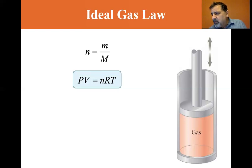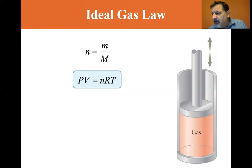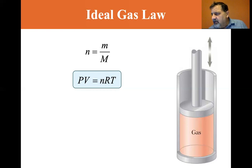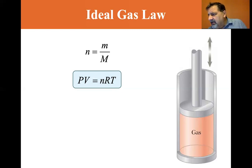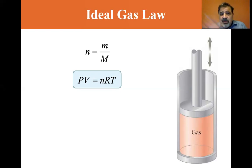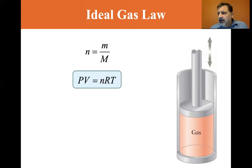The first relationship, where pressure is inversely proportional to volume, is historically known as Boyle's Law. The second, where volume is directly proportional to temperature, is Charles' Law. And the last, where pressure is directly proportional to temperature, is Gay-Lussac's Law — which also justifies the straight lines we drew for the constant volume gas thermometers.